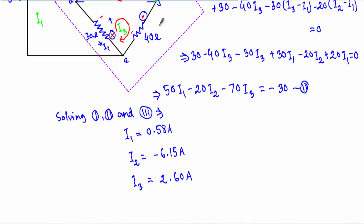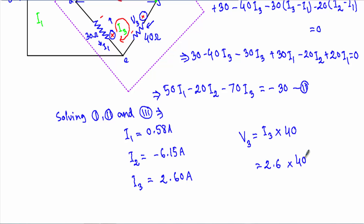I have calculated I3 equal to 2.60 ampere. Now I have to calculate the voltage dropped across this 40 ohm resistor. To calculate V3, I need the value of current flowing through this 40 ohm resistor, which is I3. The value of I3 is 2.6 ampere and the resistor has a value of 40 ohm. Therefore V3 equals 2.6 times 40, giving a value of 104 volts.